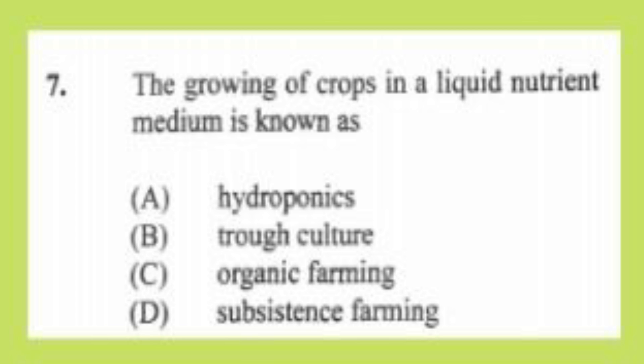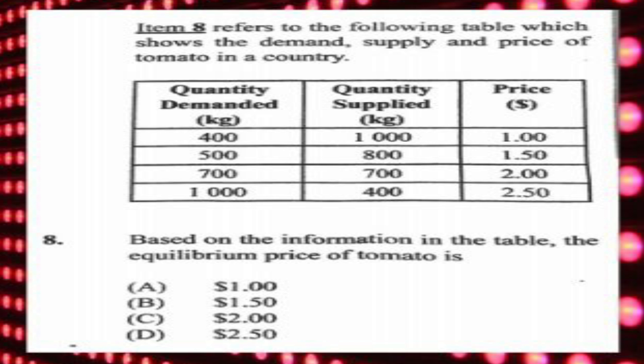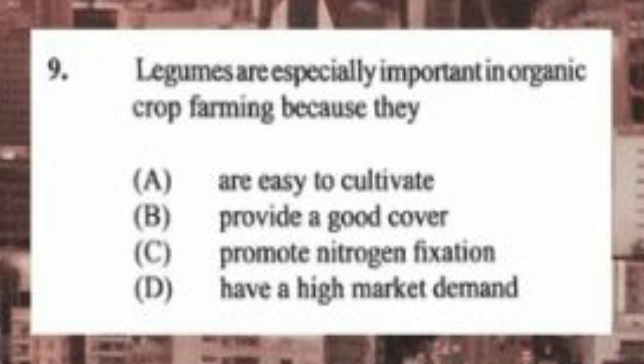Question number eight refers to a table showing the demand, supply, and price of tomatoes. The equilibrium price of tomato is A) $1.00, B) $1.50, C) $2.00, D) $2.50. The answer is C, two dollars. The equilibrium price means the buyer and seller agree on the same amount supplied and purchased at the same price — demand equals supply at equilibrium.